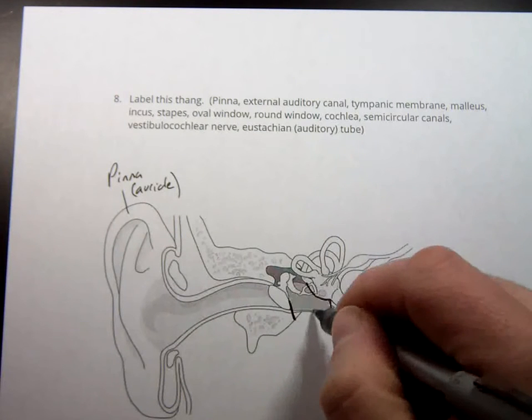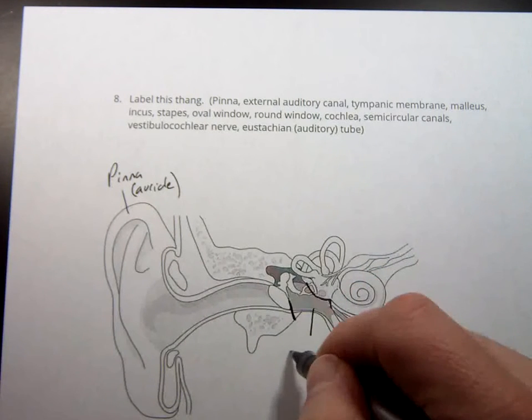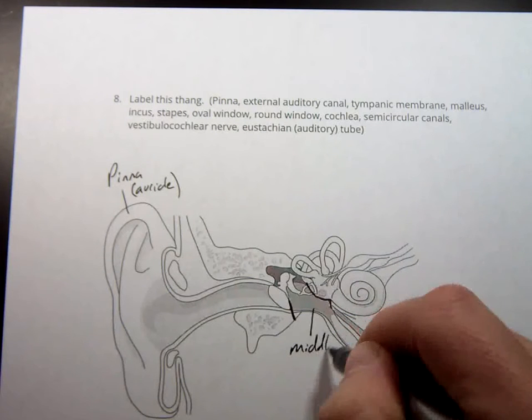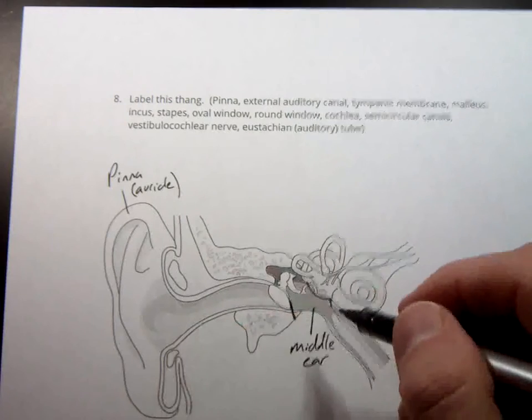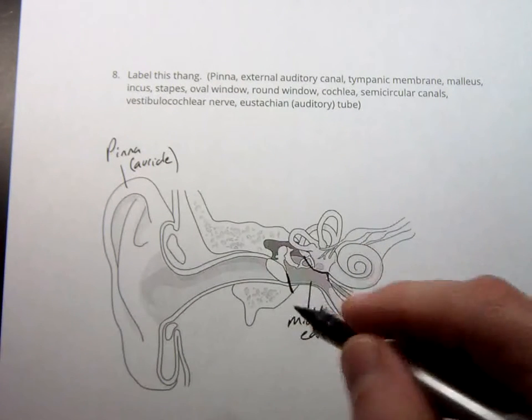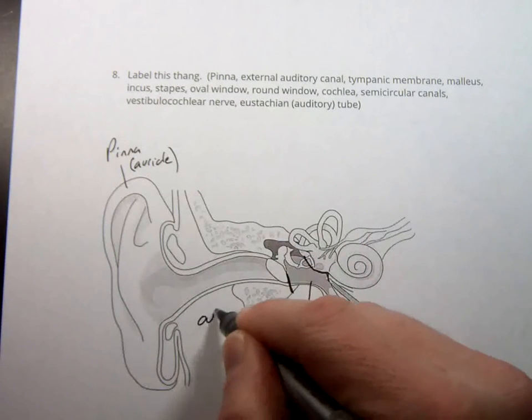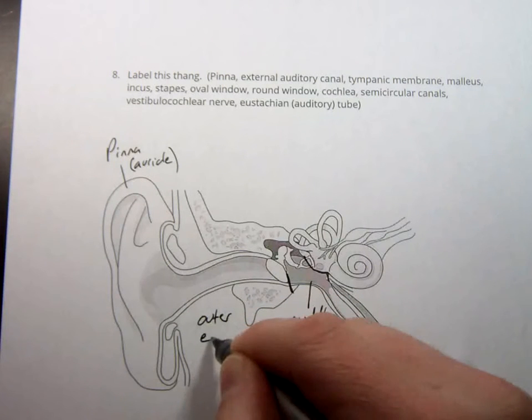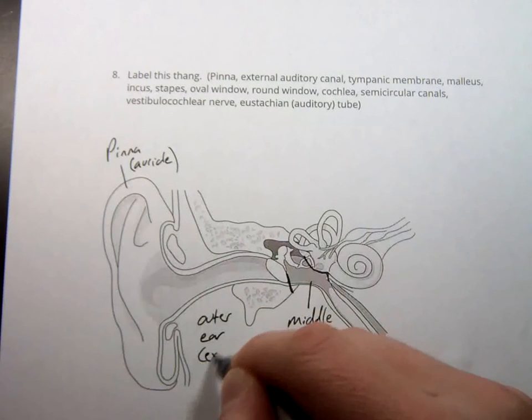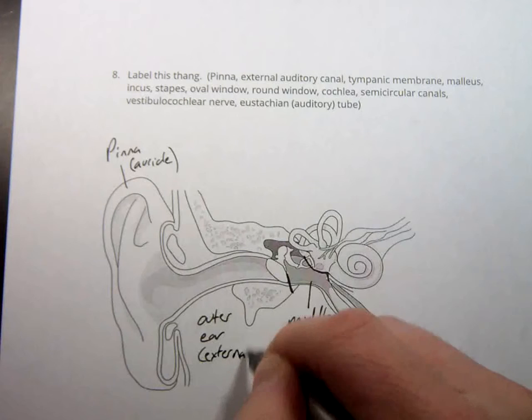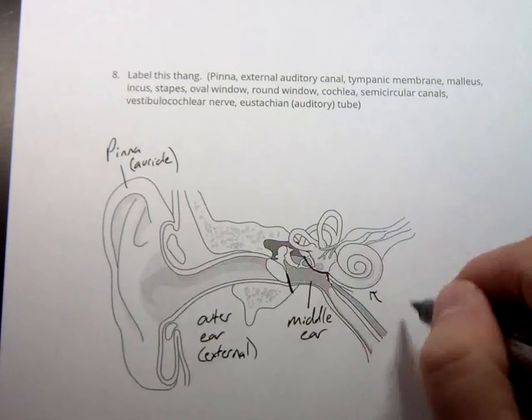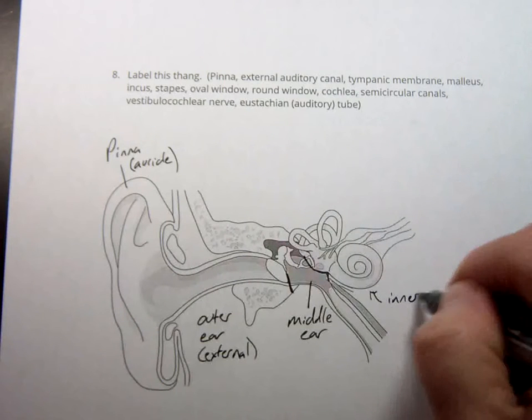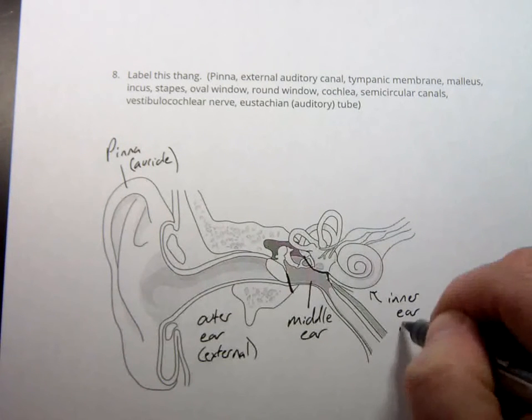Everything that's in this space here is middle ear. Everything that's out this way is going to be outer ear, sometimes called external ear. I don't want you to be confused if you see that, external ear. And that means everything on the inside of it is going to be inner ear or internal.